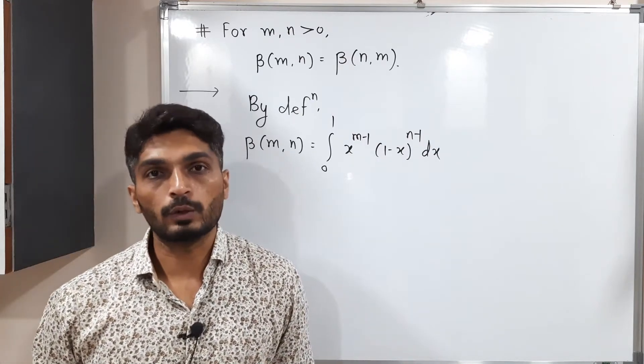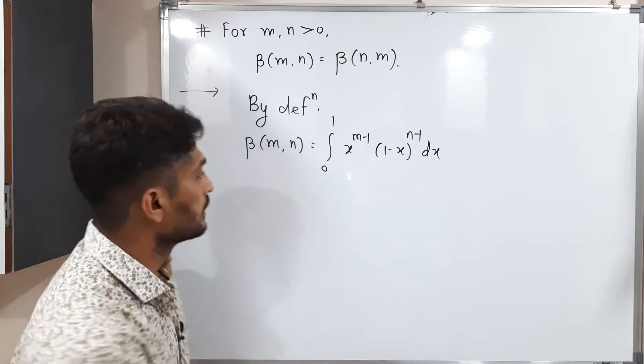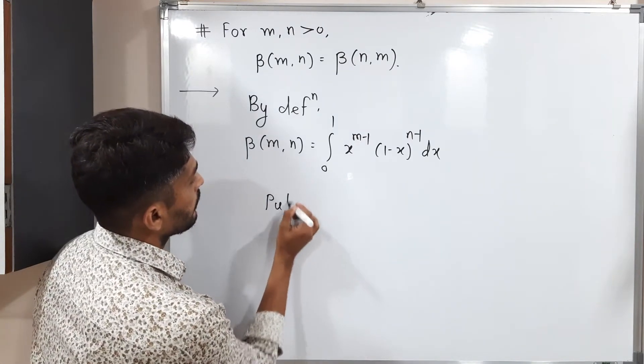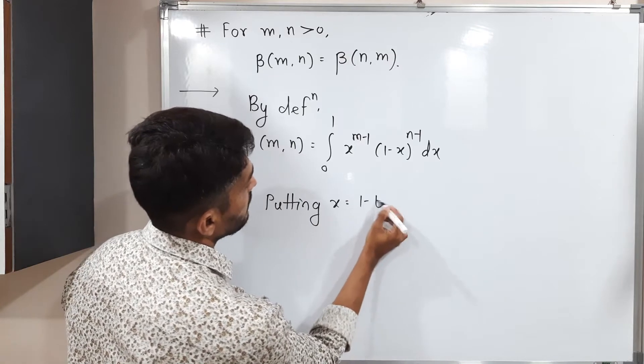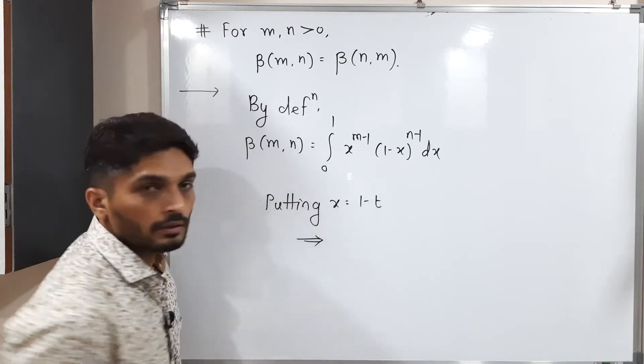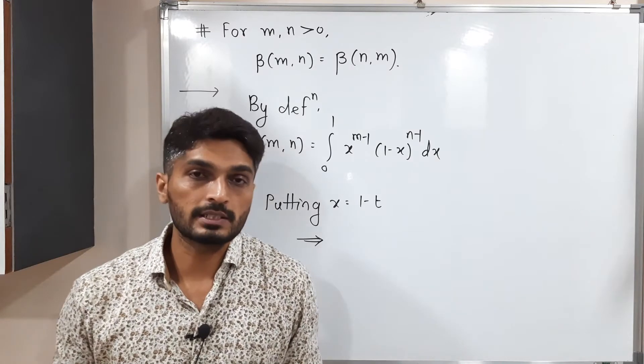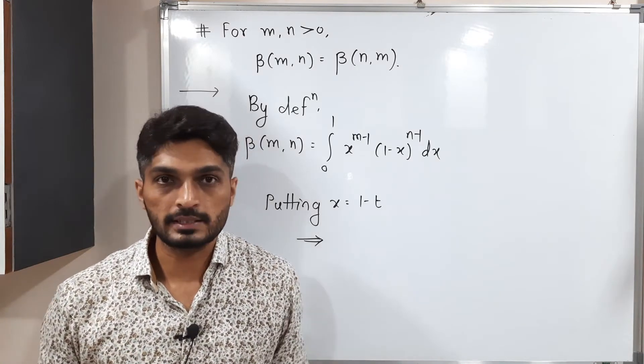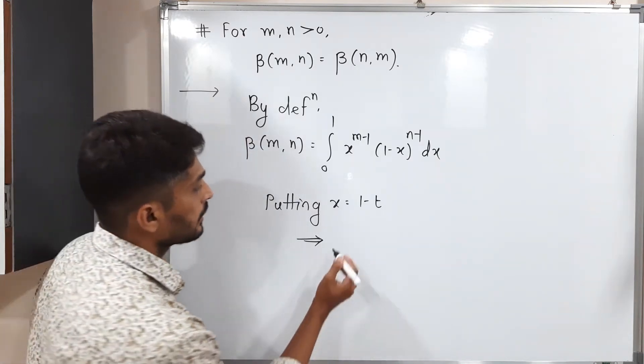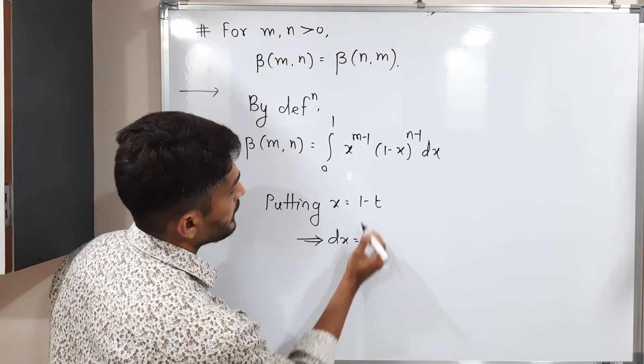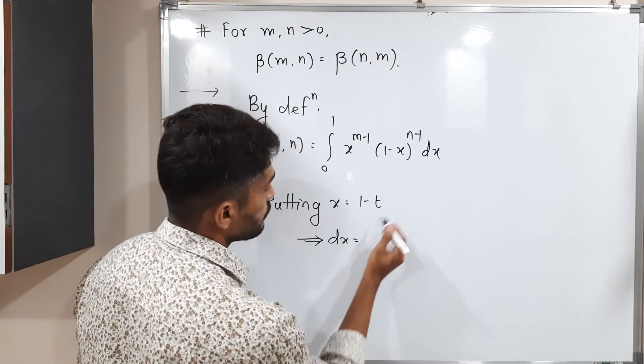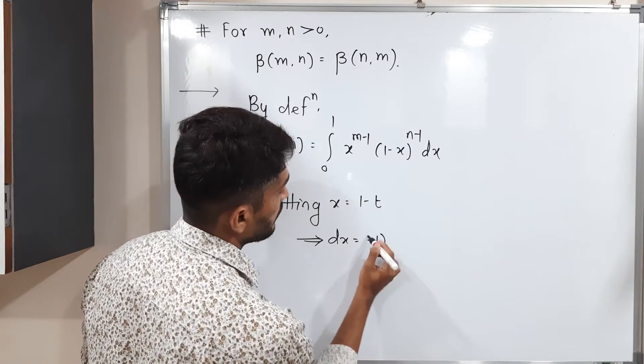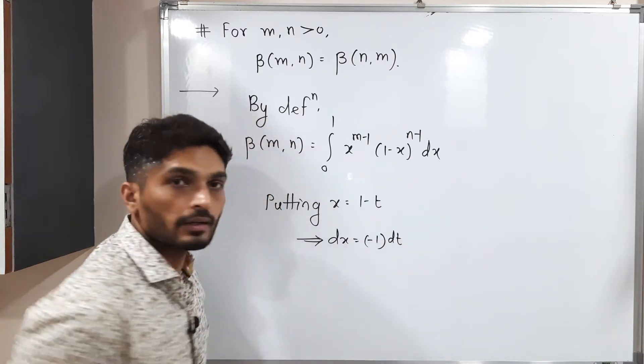I am going to put x is equal to 1 minus t here. So putting x equals 1 minus t, our first task is to find its derivative and our second task to change its limits. Let us find derivative: dx equals minus 1 dt.